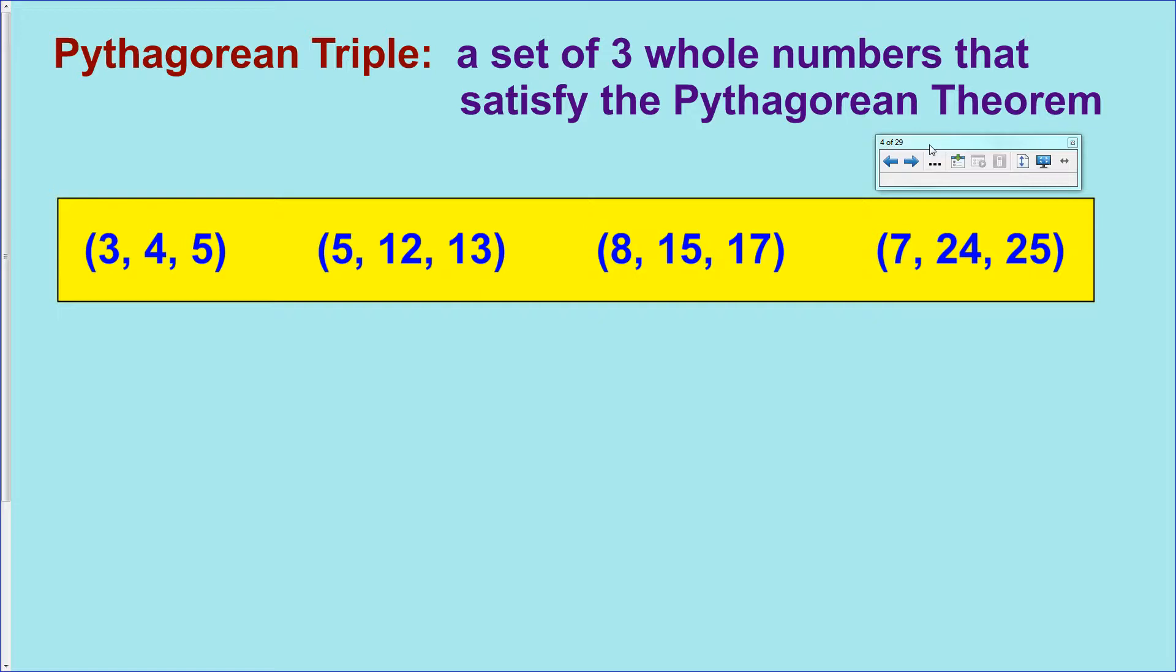But there are certain other common ones that I want you to memorize. Up on the screen, you'll see the four sets of Pythagorean Triples that I require you to memorize. Now, if you plug in each one of these sets of numbers into the Pythagorean Theorem, remembering that the longest side will always go in, be substituted in for C, all four sets of these three numbers will satisfy it. That is, one side of the equation will be equal to the other side. These are the four most common, and these are the four that I'm going to require you to memorize.